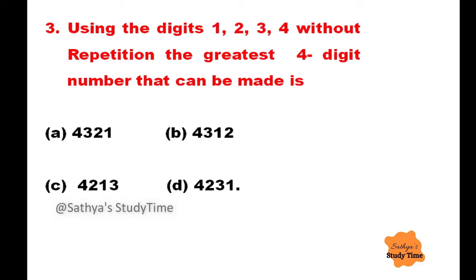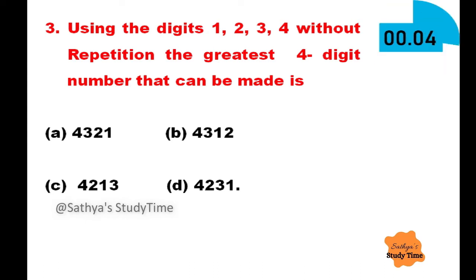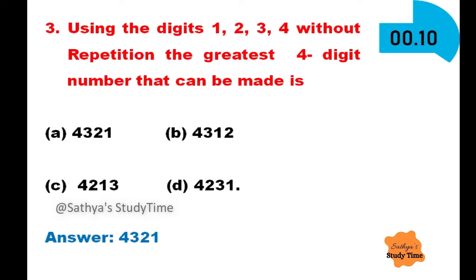Question 3: Using the digits 1, 2, 3, 4 without repetition, the greatest four-digit number that can be made is. The options are given. Your time starts now. The answer is 4321. This is the greatest four-digit number that can be made using the given digits.